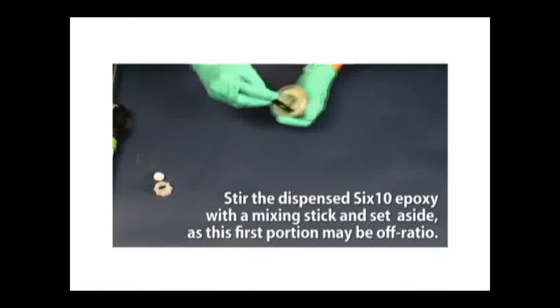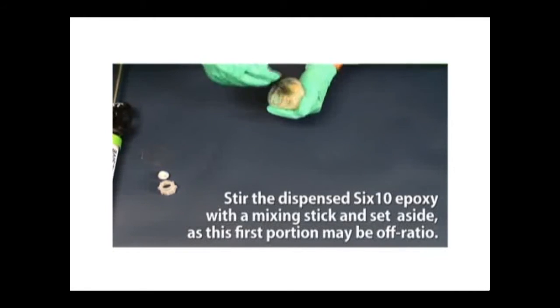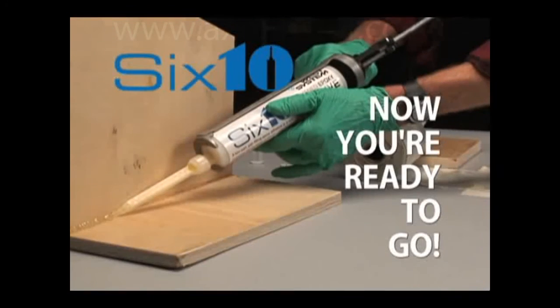Stir the dispensed 610 epoxy with a mixing stick and set aside as this first portion may be off ratio. Now you're ready to go.